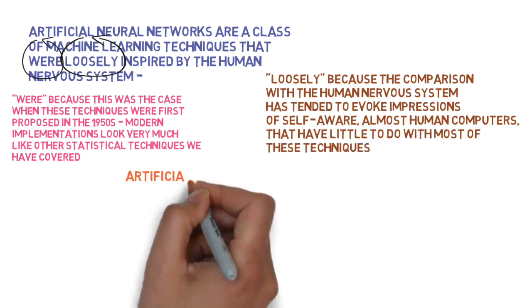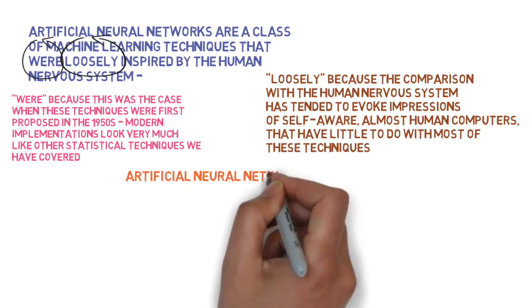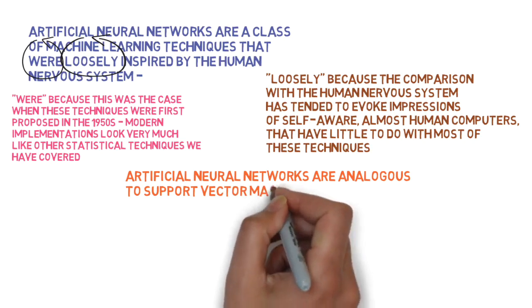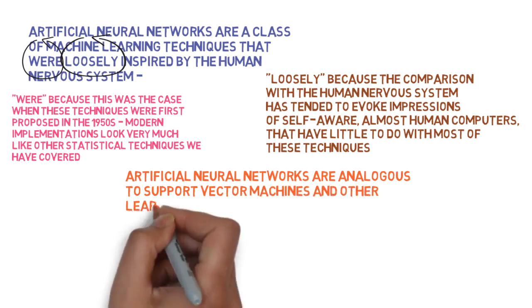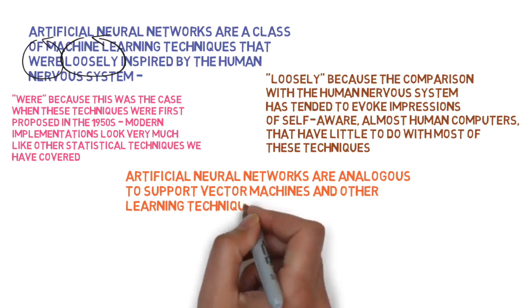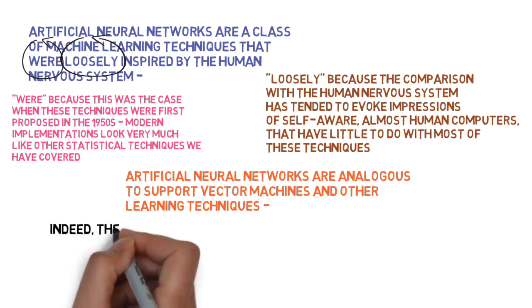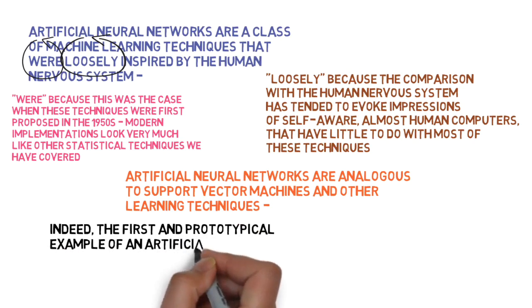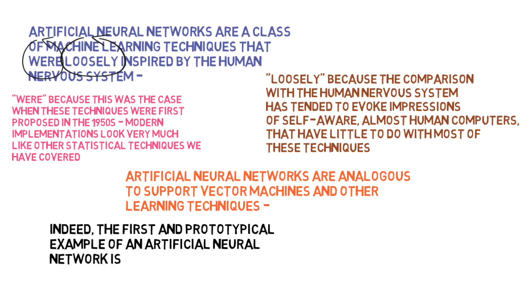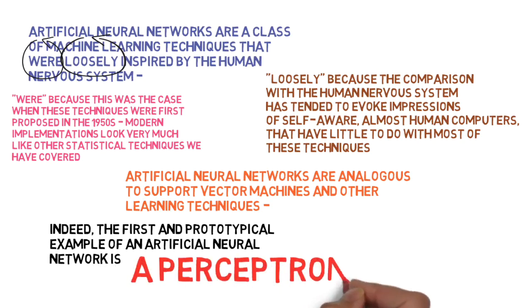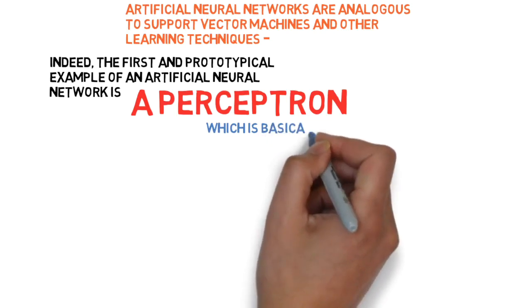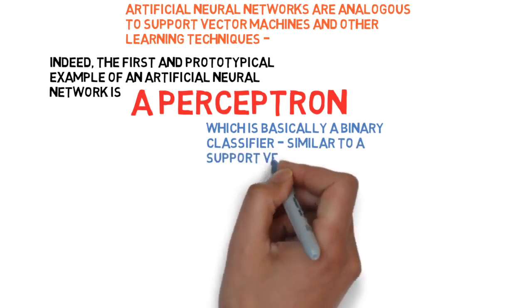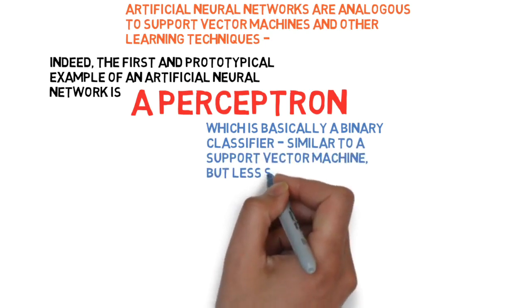So, what really are artificial neural networks? Artificial neural networks are analogous to support vector machines and other similar types of learning techniques. In fact, the first and prototypical example of an artificial neural network is the perceptron, which like the support vector machine is a binary classifier. But in fact, it's less sophisticated than a support vector machine's implementation.